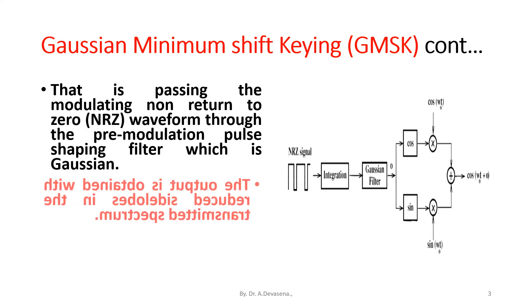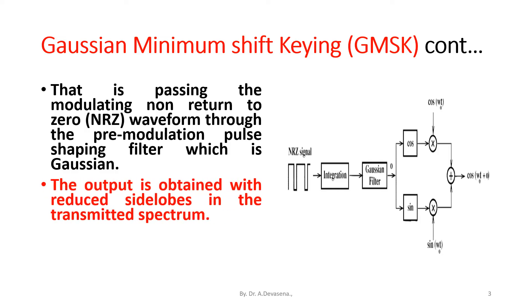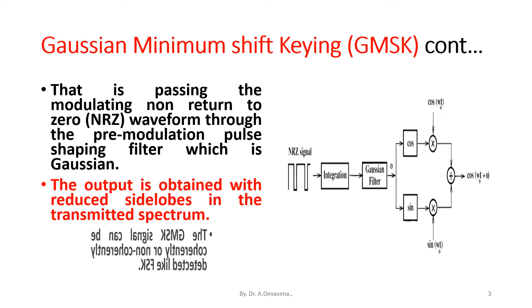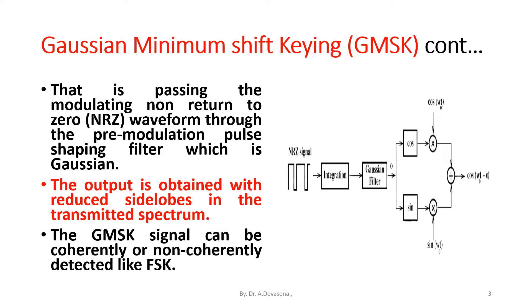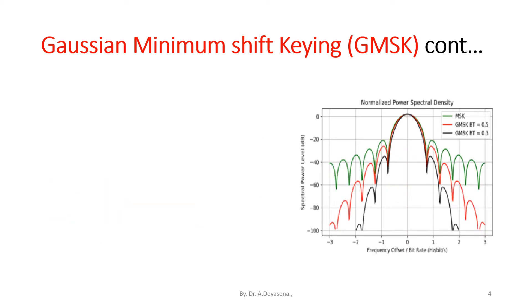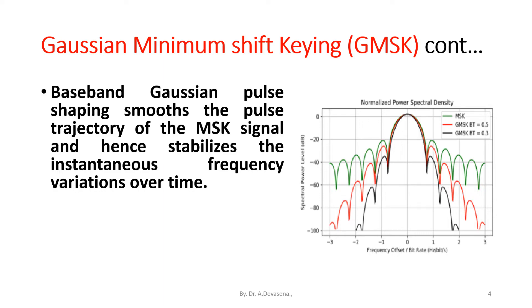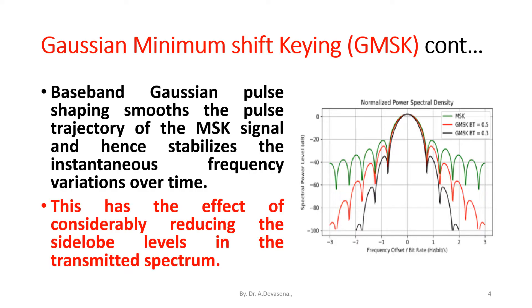The output is obtained with reduced side lobes in the transmitted spectrum. The GMSK signal can be coherently or non-coherently detected like FSK. Baseband Gaussian pulse shaping smooths the pulse trajectory of the MSK signal, and hence stabilizes the instantaneous frequency variations over time. This has the effect of considerably reducing the side lobe levels in the transmitted spectrum.